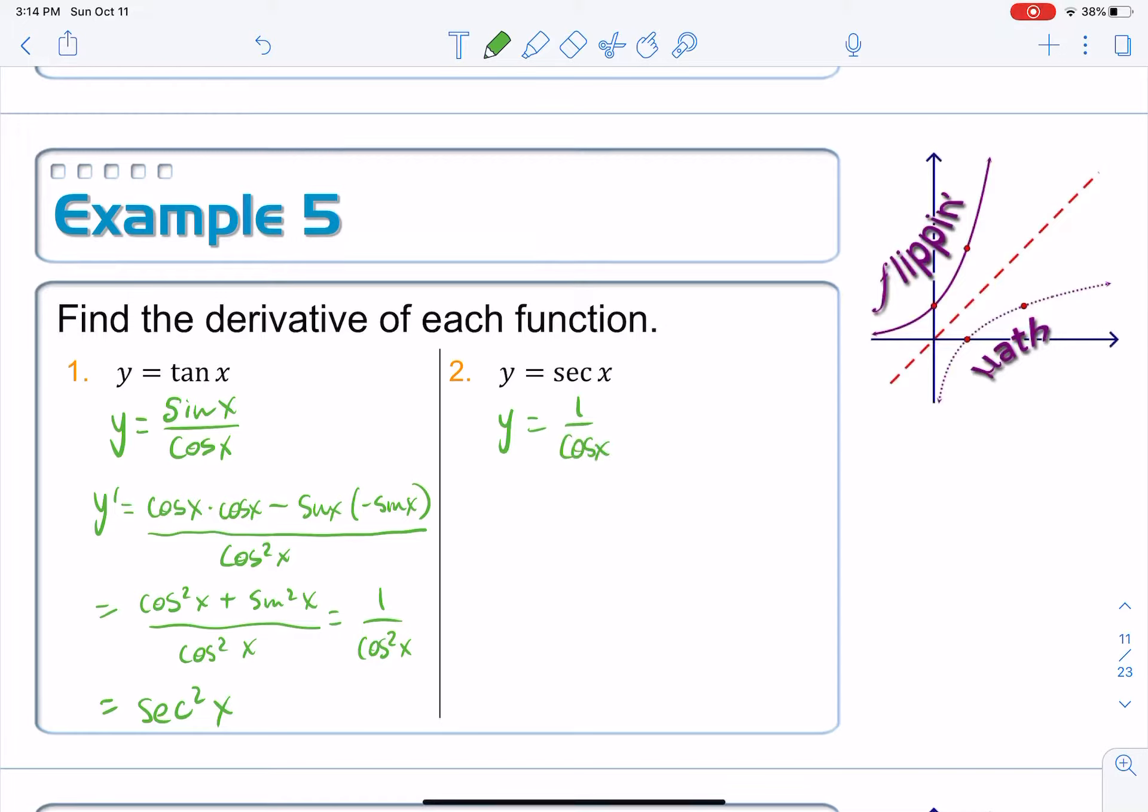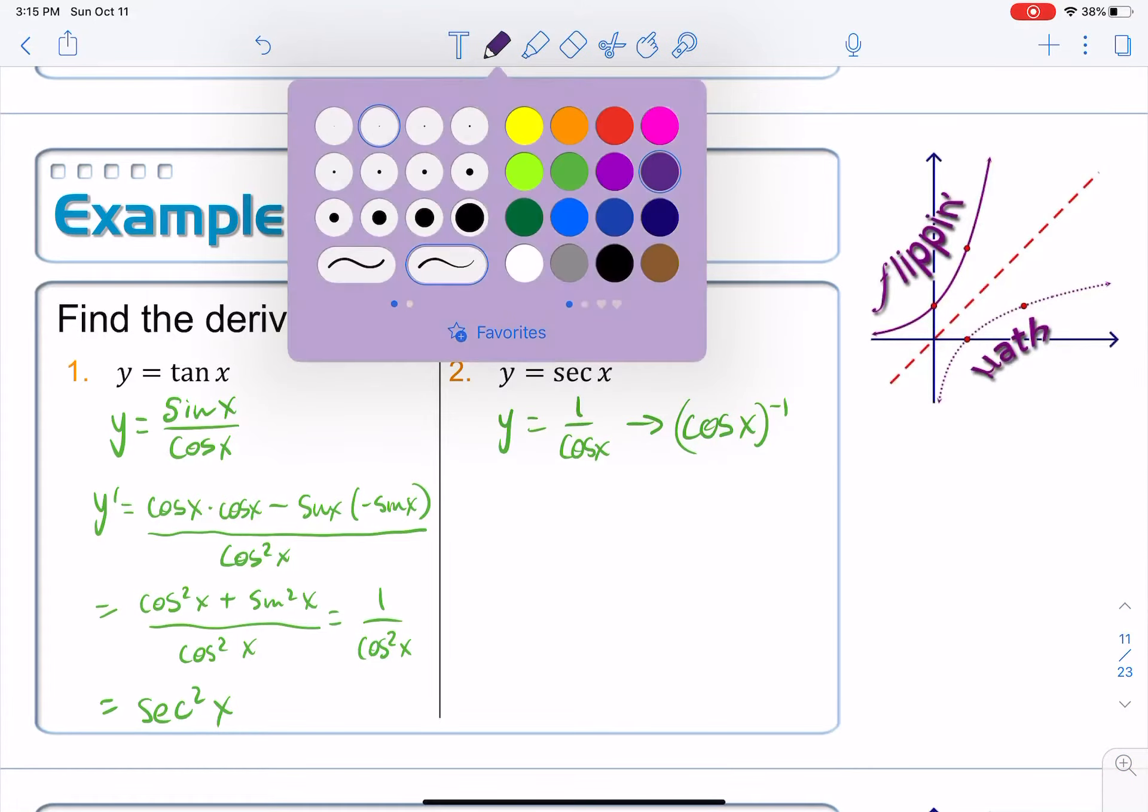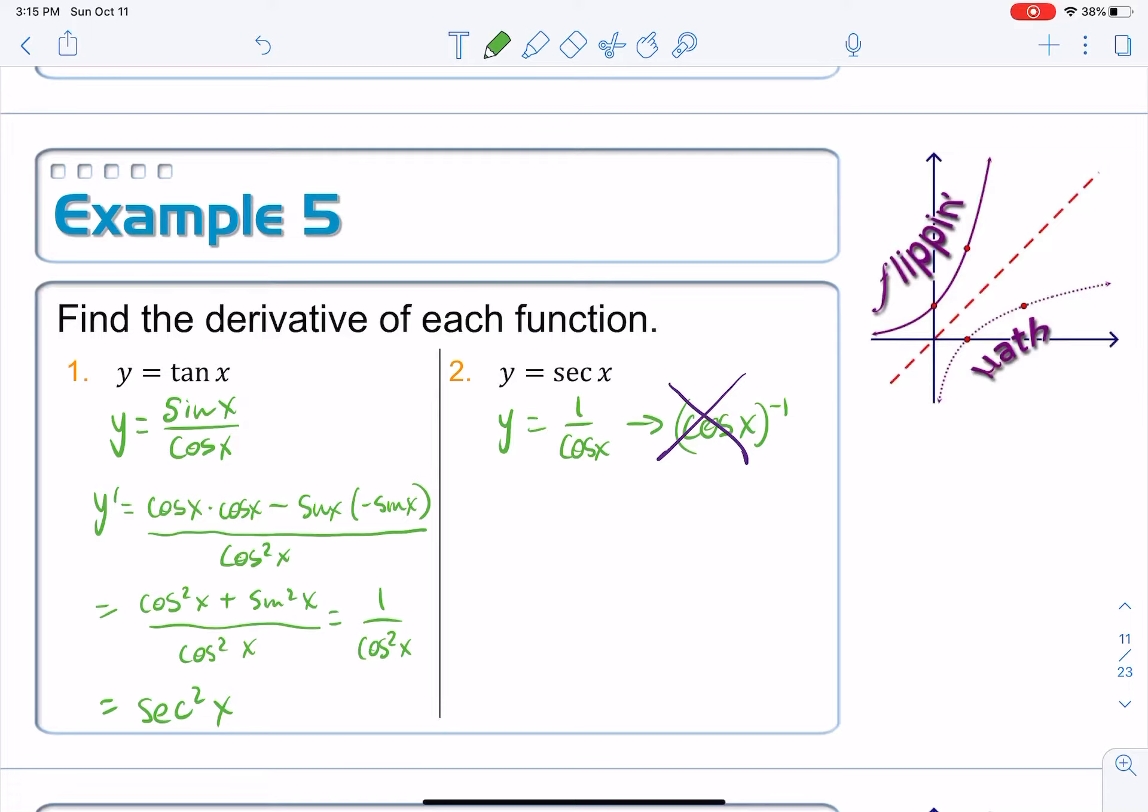Now, once we learned the chain rule, we could rewrite this as cosine x to the negative one power, not to be confused with the inverse of cosine, because that's totally different. But the reason why I can't just directly take the derivative with the negative one power is because this is a composite function and would need the chain rule. So instead, I'm going to use the quotient rule on this, where the top function is just one.